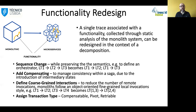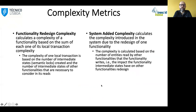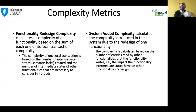The final step is to assign a transaction type to each one of the local transactions identified. With these operations, the architect can redefine the functionality in different ways — for instance, using a coordinator at the top, which is more of an orchestration approach, but these will have different complexity costs. Because of that, we define two new complexity metrics built on top of our previous complexity metric: the functional redesign complexity, which measures the complexity of migrating this functionality, and the system added complexity, which measures the impact of migrating this functionality on the other functionalities. For example, when writing in a functionality, intermediate states are created, and all other functionalities that access this data may need to deal with these intermediate states and implement compensating transactions.